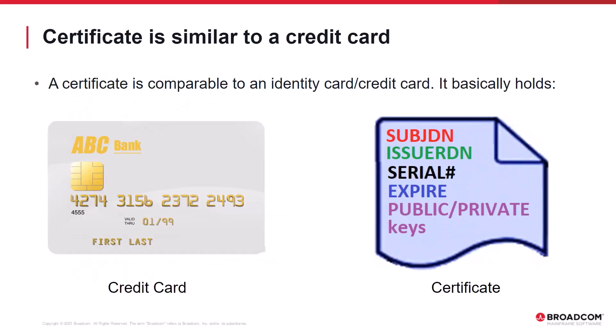A digital certificate is similar to a standard credit card that we use every day. We see a typical credit card on the left and the representation of a certificate on the right. A certificate's subject DN uniquely identifies the certificate's or credit card's owner, similar to the cardholder's name. The issuer DN of a certificate is similar to the credit card issuer — it identifies who issued or authenticated the certificate or credit card. In this example, ABC Bank issued the credit card. The serial number of a certificate is similar to the credit card account number, identifying a unique number associated with the issuer. The expiry date of a certificate is similar to the credit card's valid-through date, indicating when the certificate or credit card will expire.